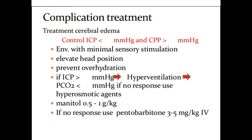ICP should be controlled for cerebral edema. Elevate the head position and prevent over-hydration. If intracranial pressure is elevated, hyperventilation therapy should be considered and ICP should be lowered. If no response, use hyperosmotic agent like mannitol 0.5 to 1 mg per kg. If still no response, use phenobarbitone 3 to 5 mg per kg body weight intravenously, which will help in management of cerebral dysfunction.